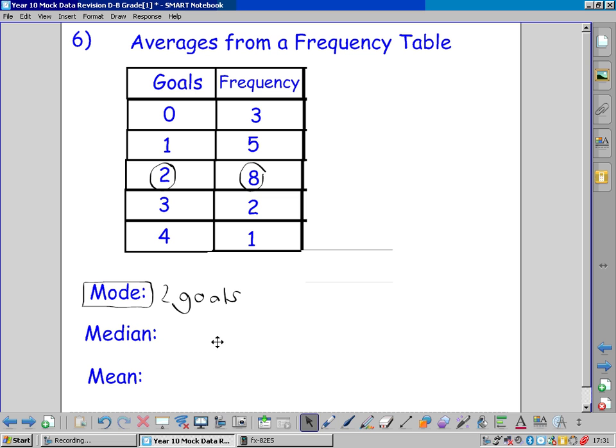The median requires two steps of working out. To find the median, we do n plus 1 divided by 2, and n is the number of games. These are the goals and these are the frequencies. How do we find the number of games? It's the total frequency.